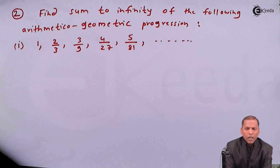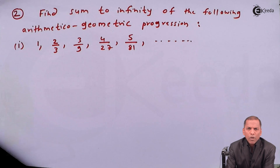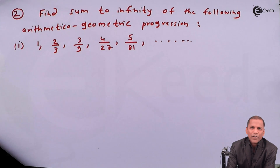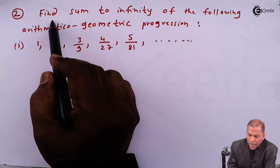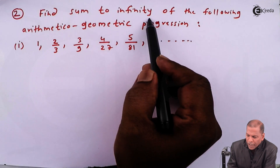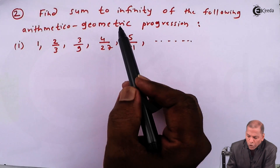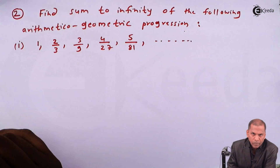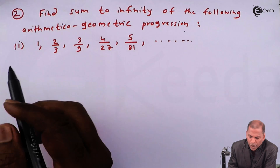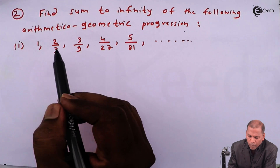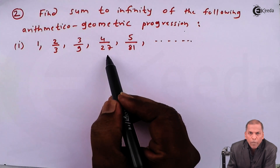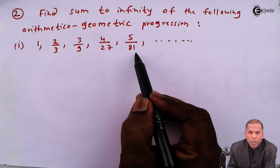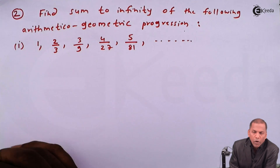Hello friends. Now we see problem number two, which is also based on arithmetical geometric progression of the chapter sequence and series. The question is: find the sum to infinity of the following arithmetical geometric progression. Sub-question one: the given terms are 1, 2/3, 2/9, 4/27, 5/81, and so on.